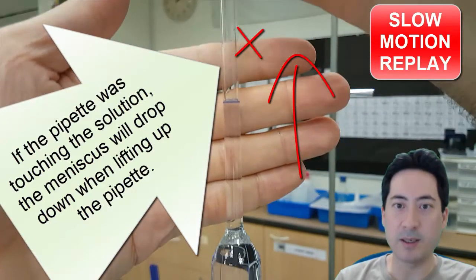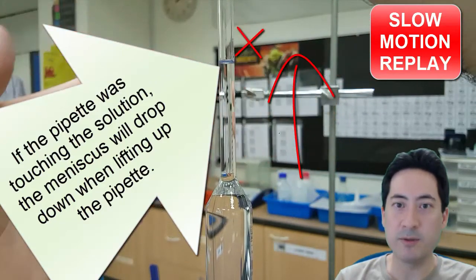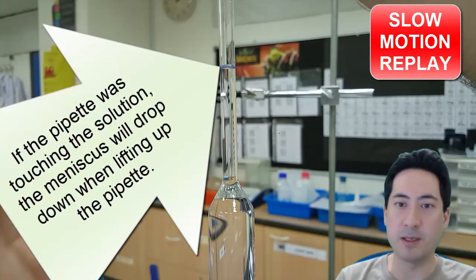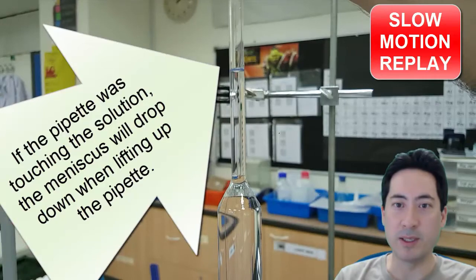And so as I lift the pipette up and down, I can see the meniscus isn't moving. But if the pipette was in the solution, I was moving it up and down, the meniscus would move up and down just because of that.